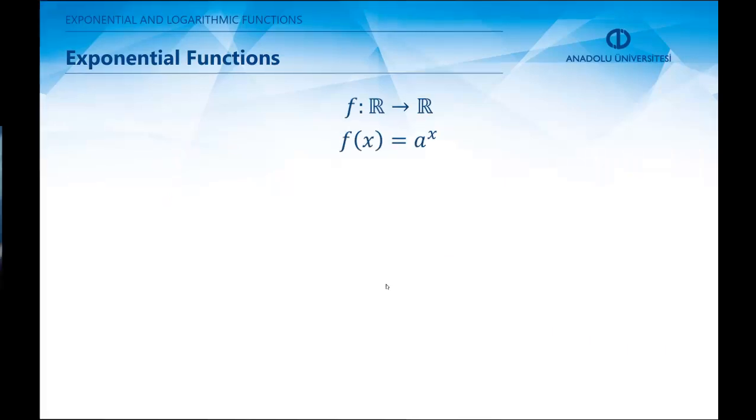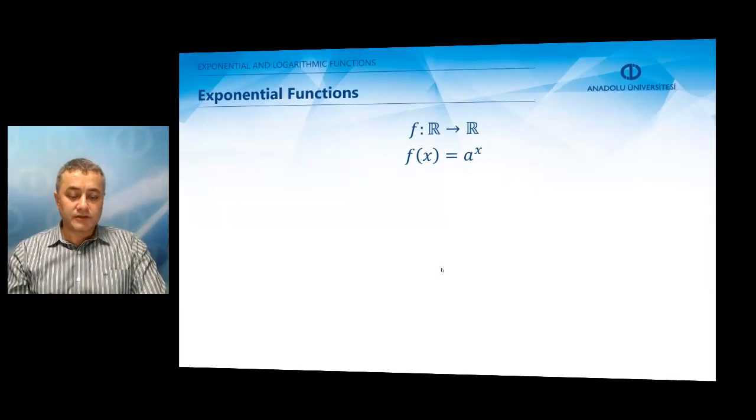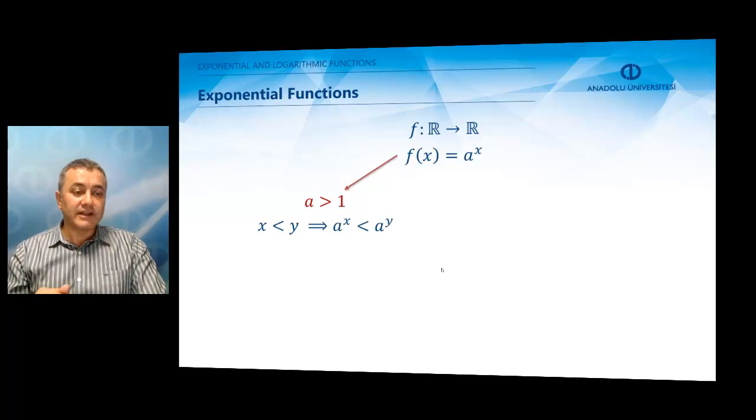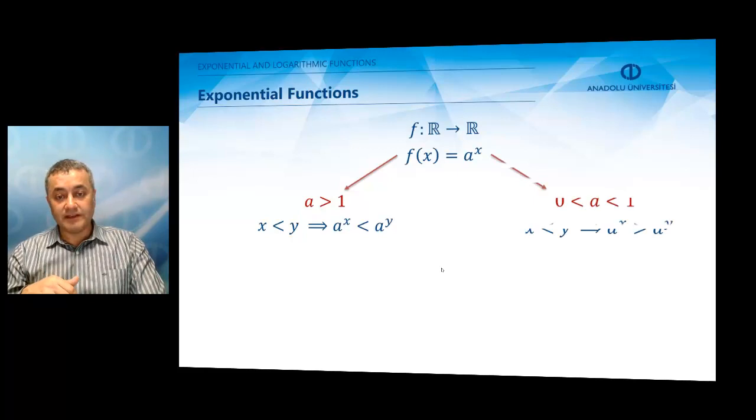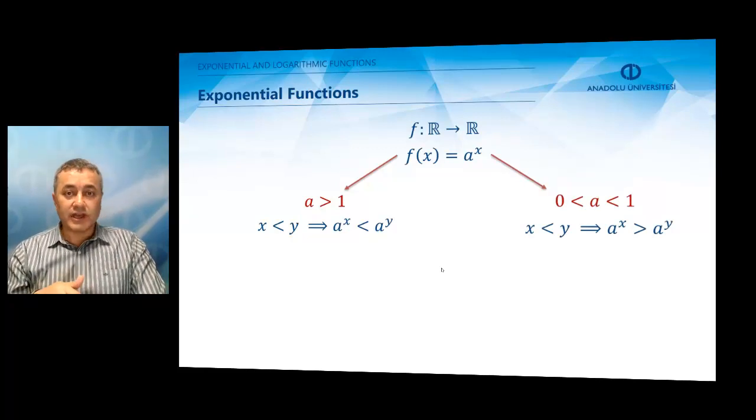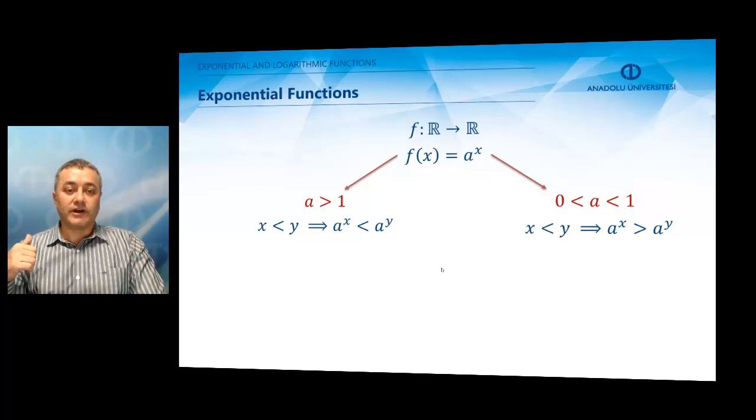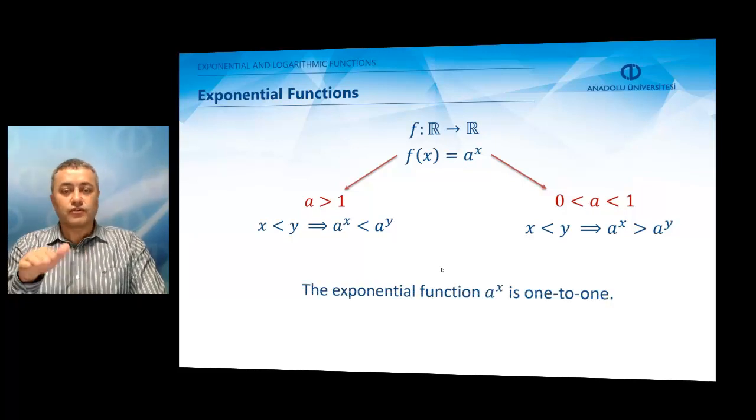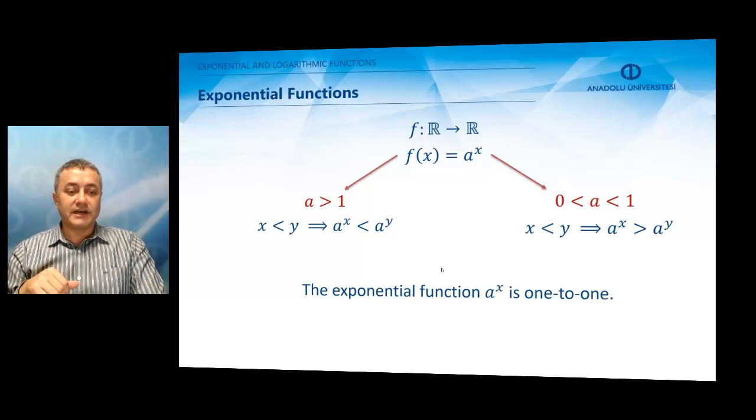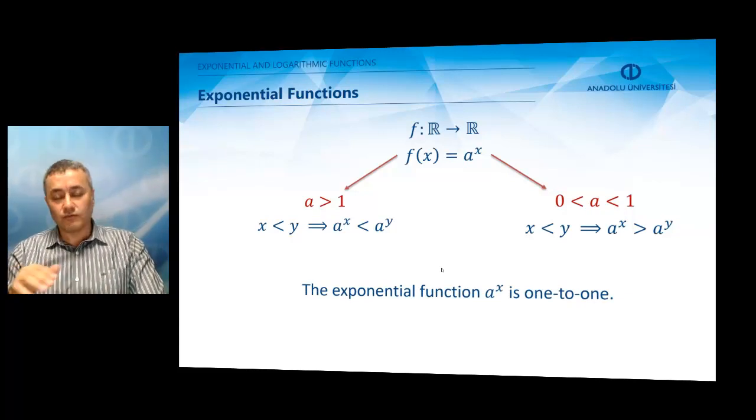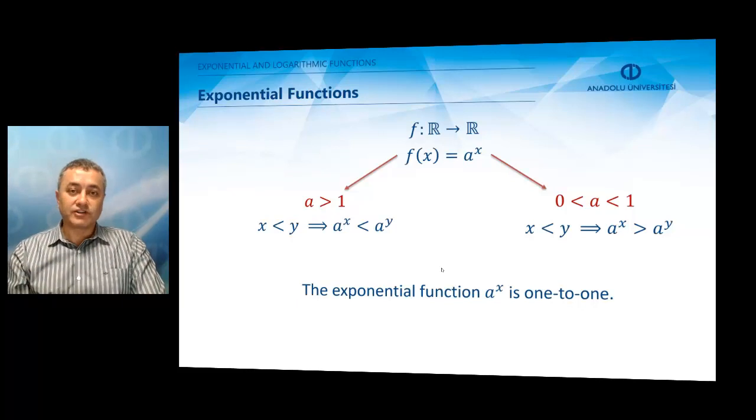We may derive the following conclusions from the previous graphs. When a > 1, if x < y, then a^x < a^y. If a is between 0 and 1, when x < y, a^x becomes greater than a^y. This means that the exponential function a^x, whether a is greater than 1 or less than 1, is a 1-to-1 function. So, we may talk about the inverse of this function, which we are going to do in a couple of minutes.